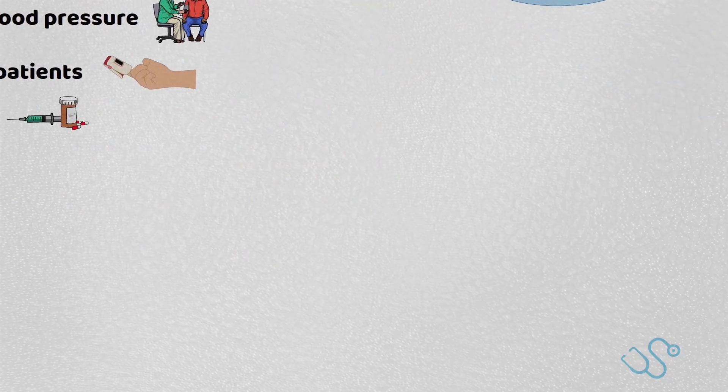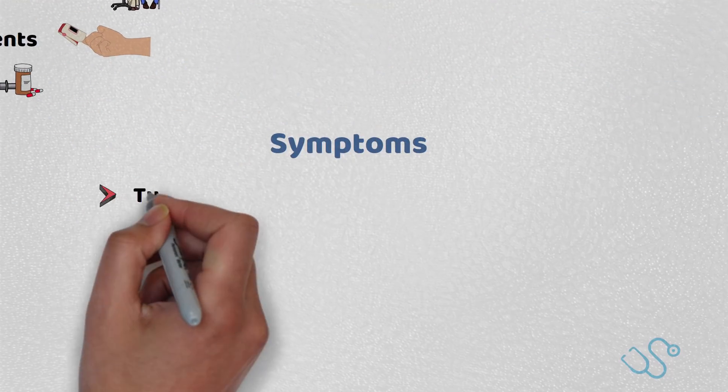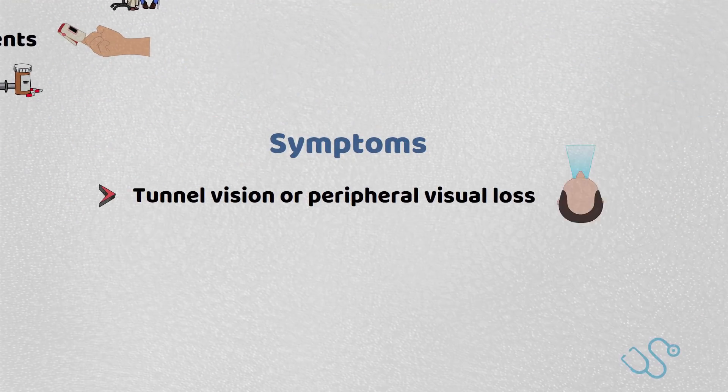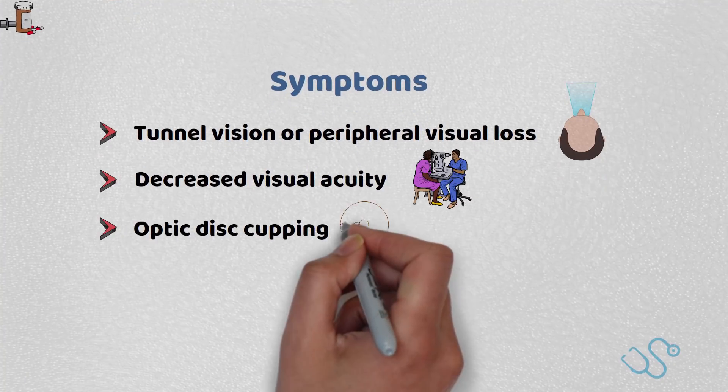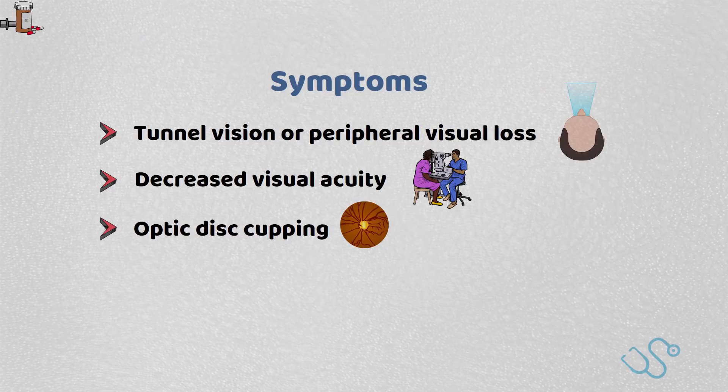Typically, patients would present with what they'd call tunnel vision or peripheral visual loss. Sometimes they present with decreased visual acuity, and on examination there'll be some classic optic disc cupping.